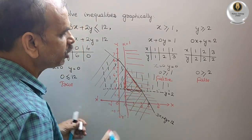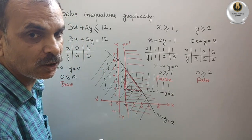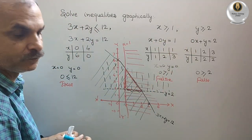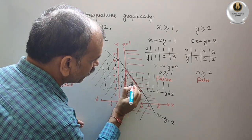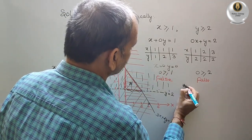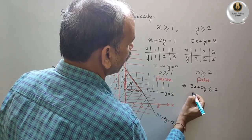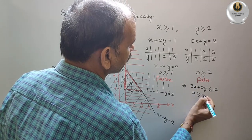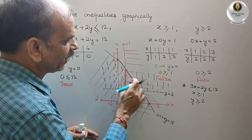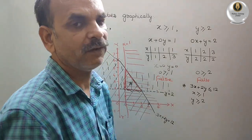Where all three shaded regions overlap is your feasible region. You can see the region where all three lines intersect. Mark this region with a star. The star represents the solution set: 3x plus 2y is less than or equal to 12, x is greater than or equal to 1, and y is greater than or equal to 2. Write all three equations in this region. Thank you.